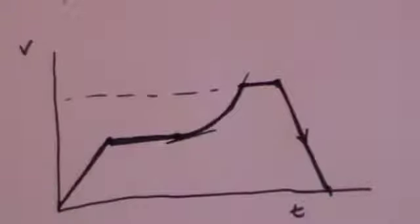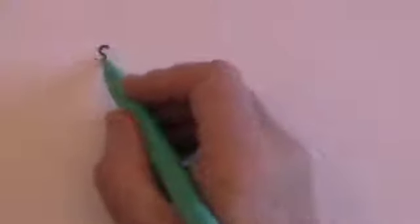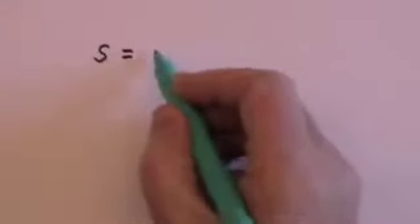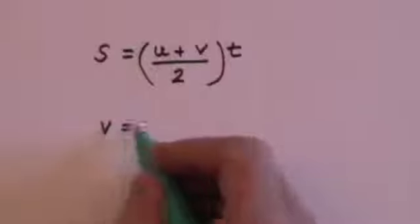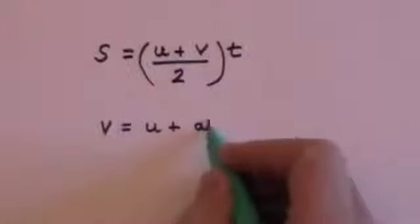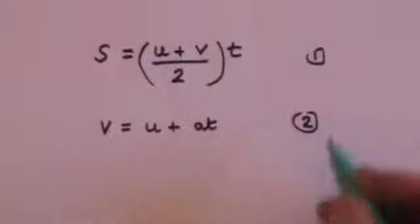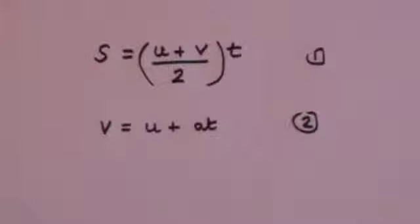Once again, it's impossible to have any line that goes backwards in time on a velocity-time diagram. Now we're ready to go on to the third SUVAT equation. To do that, I'll first remind you of the first SUVAT equation: distance S equals initial velocity plus final velocity over 2, all times T. And the second SUVAT equation: V equals U plus AT. Both of these were derived earlier in this video.